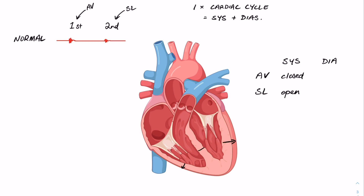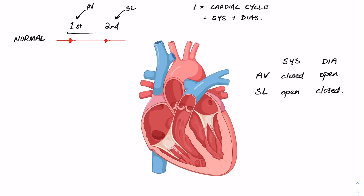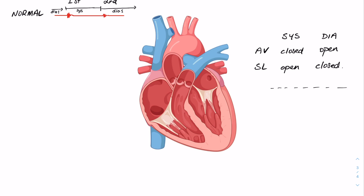During diastole, when the heart is relaxing, blood exits the atria and fills the ventricles, so the atrioventricular valves will be open. However, the backflow of blood through the great vessels is going to snap the semilunar valves shut. So: AV valves closed during systole and open during diastole; semilunar valves open during systole and closed during diastole. Incorporating the phases of the cardiac cycle within the cardiogram, the first heart sound correlates with the beginning of systole, and the second heart sound correlates with the beginning of diastole.